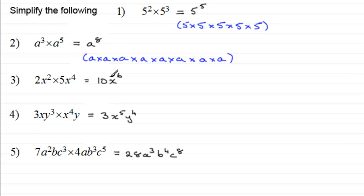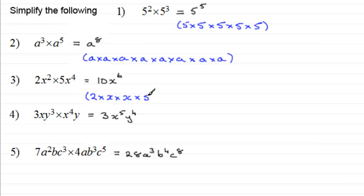For number three, two x squared times five x to the power four — we got ten x to the power six. That's because two x squared is short for two multiplied by x multiplied by x, and then we've got to multiply this by five x to the power four, which is short for five multiplied by x by x by x by x. You can see that two times five gives the ten, and then we had x to the power six because we've got x repeatedly multiplied by itself six times over.